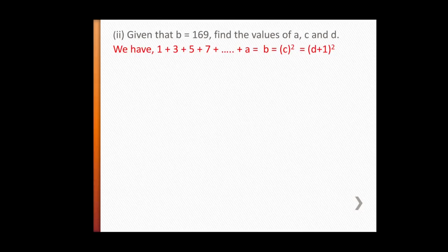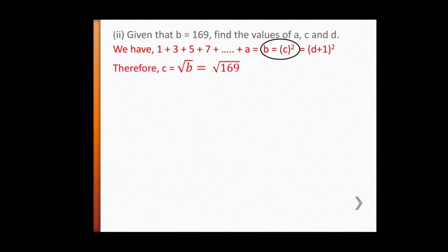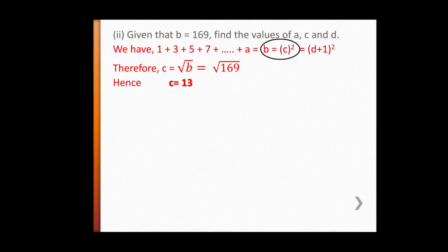Starting with c: from the statement, b = c squared. Since b = 169, c = √b = √169 = 13. We already know that 13 × 13 = 169, so c = 13.